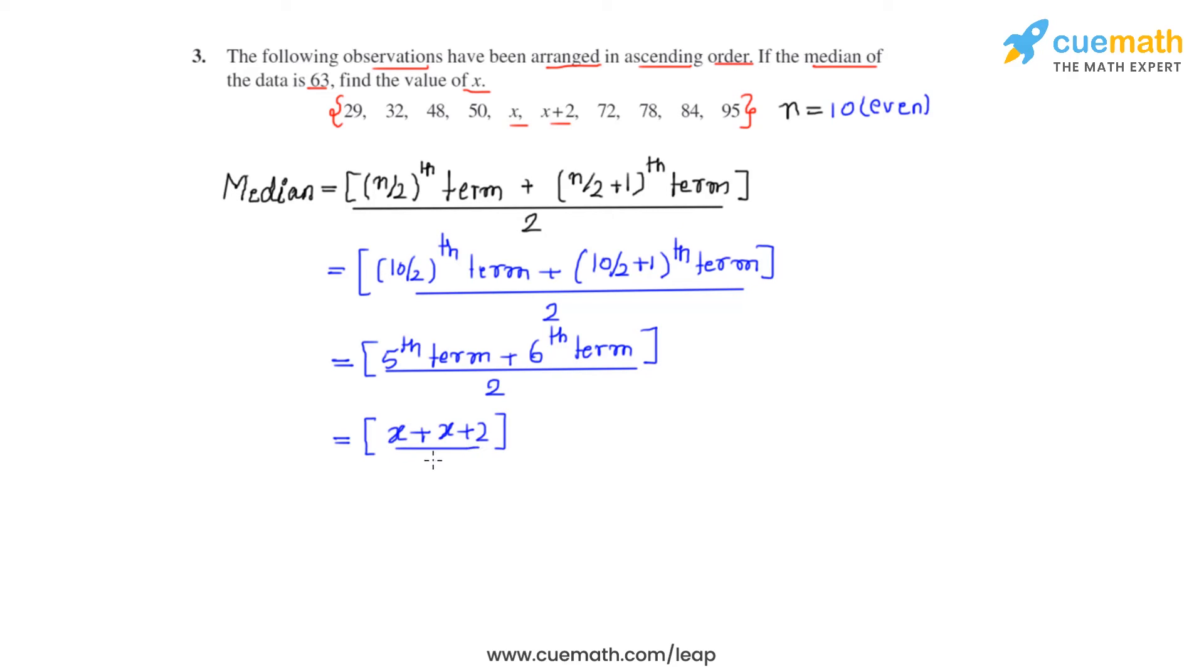We add them both and we divide it by 2. So, we finally get it as x plus 1. As given in the question, we know that the median for this data, for this given set of data is 63. So, we equate x plus 1 to 63.